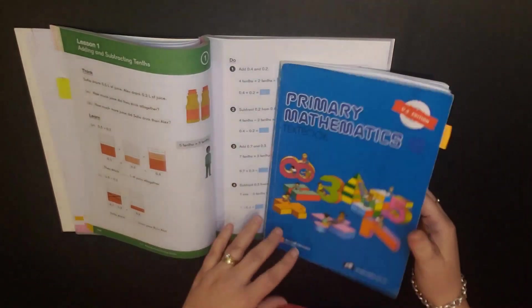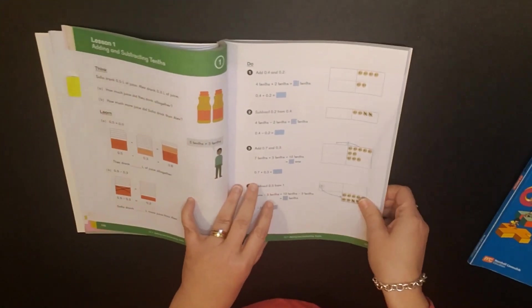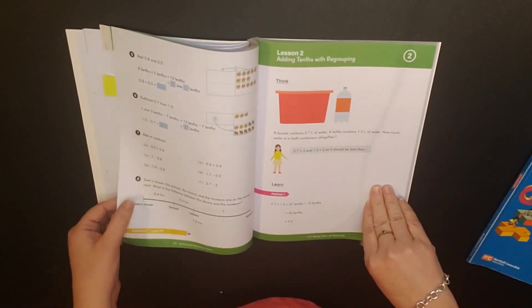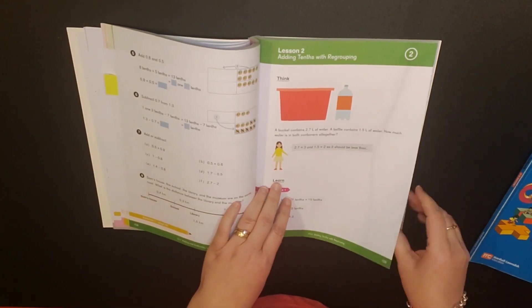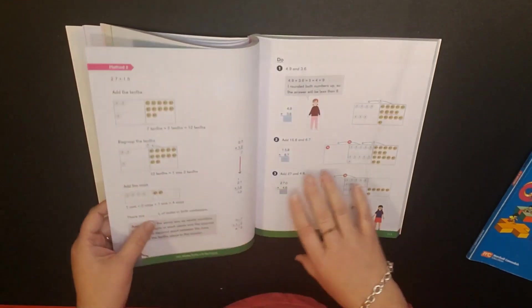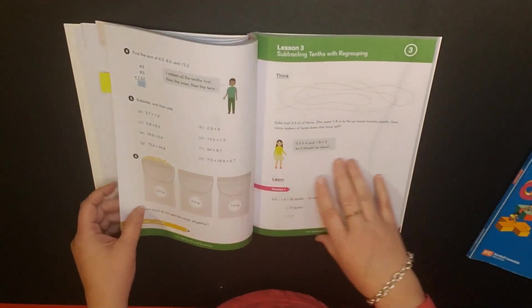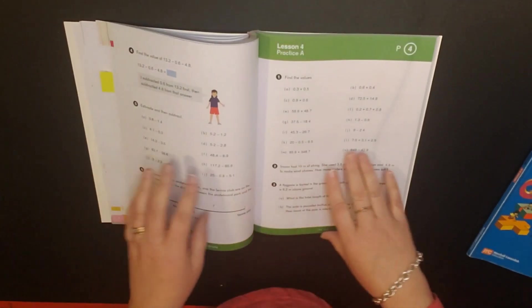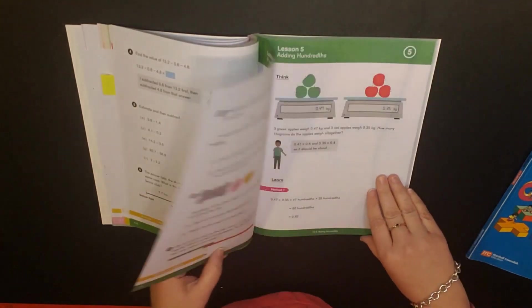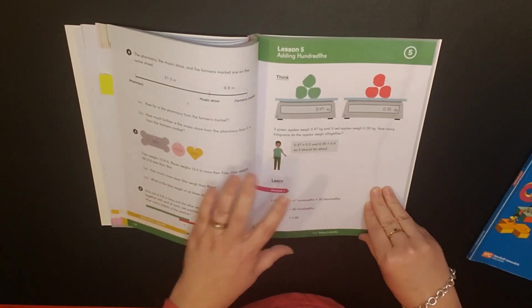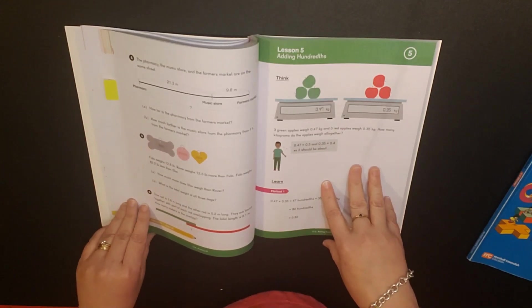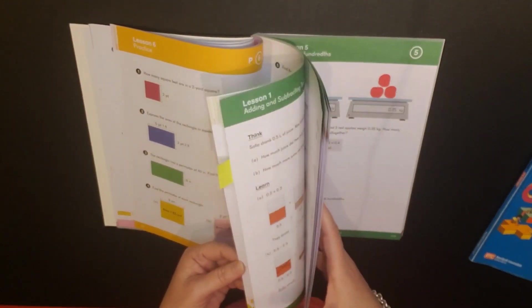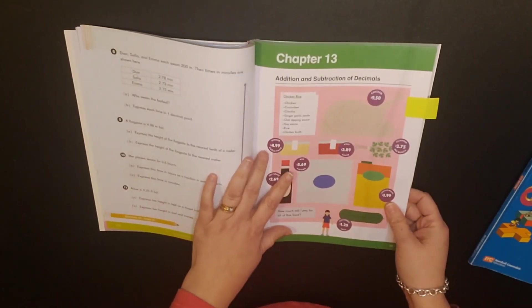Within this unit you're doing tenths and hundredths, all of the addition together then all of the subtraction together, whereas with dimensions you're doing tenths which you do for eight problems, then you do tenths with regrouping, then you do subtracting tenths with regrouping, then you're into practice and then you get into hundreds. So that is one of the differences in the way that they lay it out for how they're going to teach this.